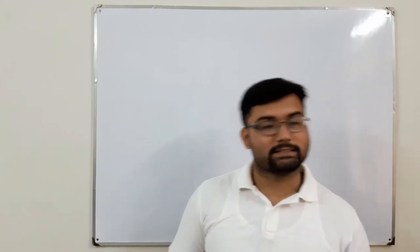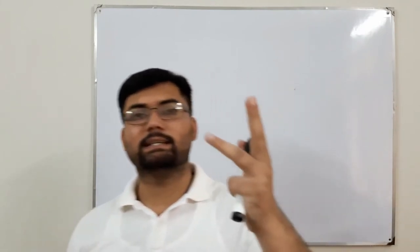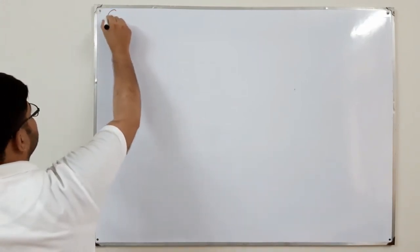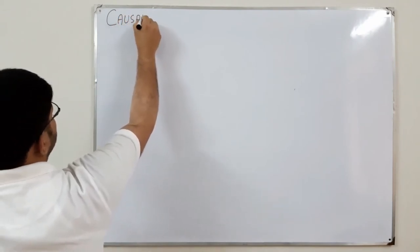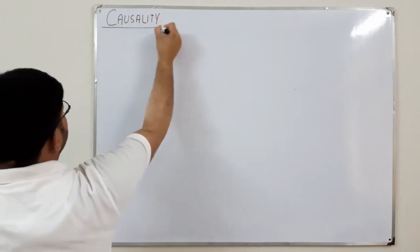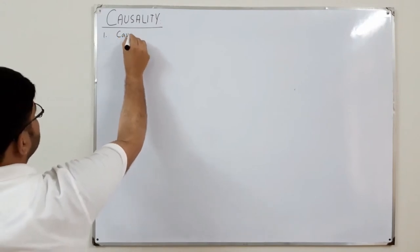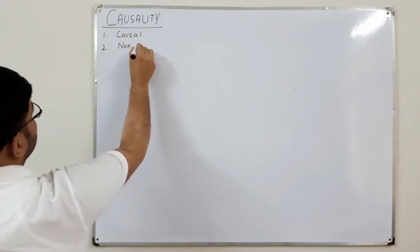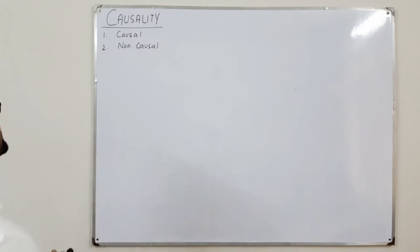Assalamu alaikum, Salah Khan here. Today we look at the third property of systems, which is causality. Based on causality, we have two types of systems: the first is a causal system and the second is a non-causal system.